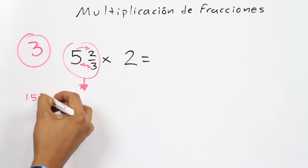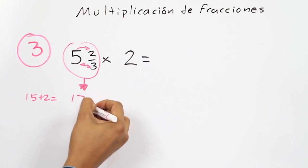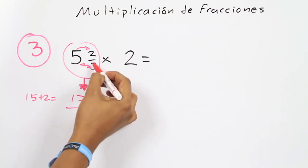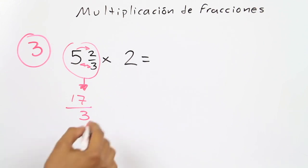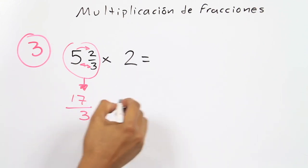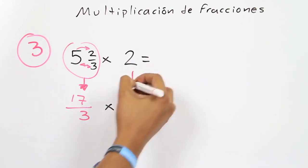So in this case, 3 times 5 equals 15, and 15 plus 2 is 17, and keep the same denominator, which is 3. For the whole part, you just divide the number by 1 and keep the same value, but now as a fraction.